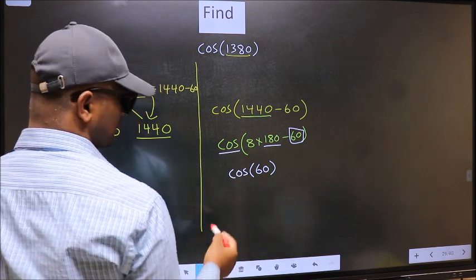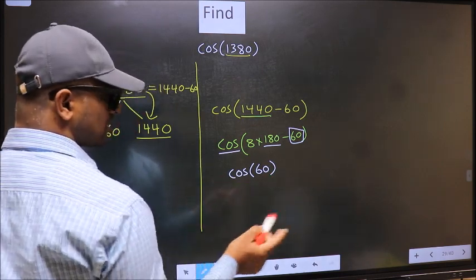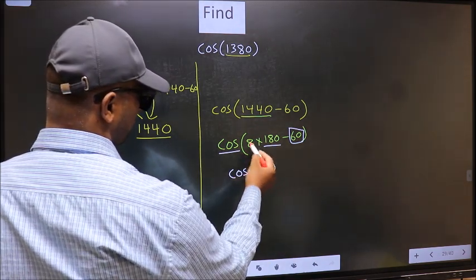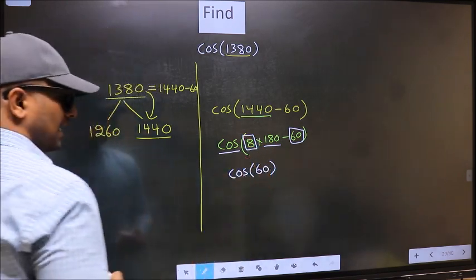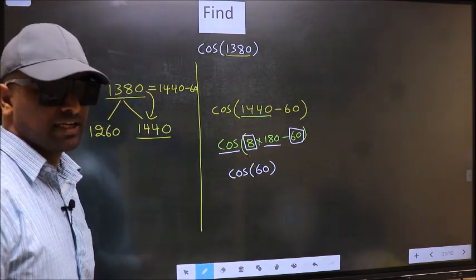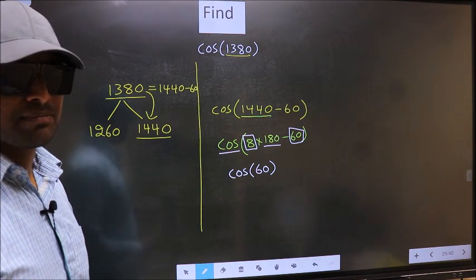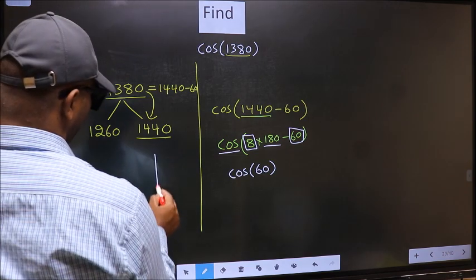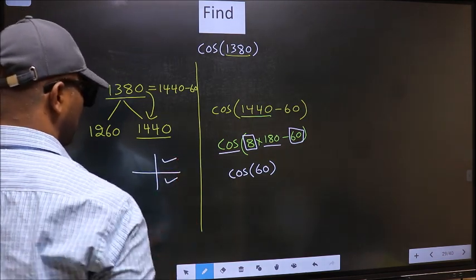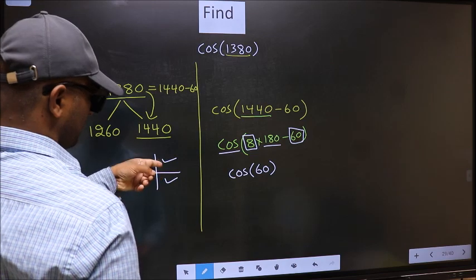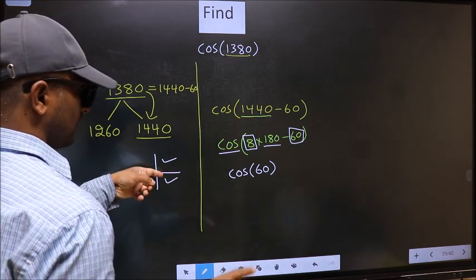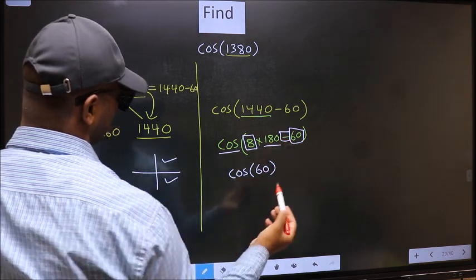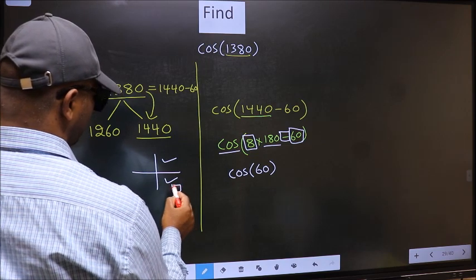Now the question is, will we get here plus or minus? To answer that, we should look at the number before 180. That is 8. And 8 is even. All the even multiples of 180 lie either in the first or in the fourth quadrant. So now to select the quadrant, we should look at this symbol. Here we have negative. That means the angle lies in the fourth quadrant.